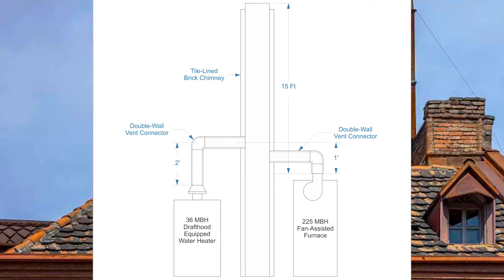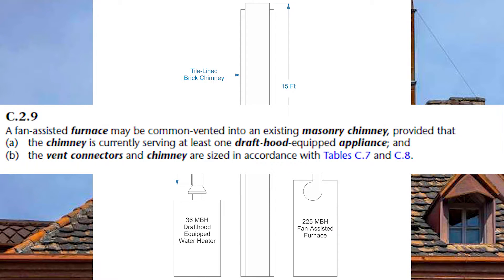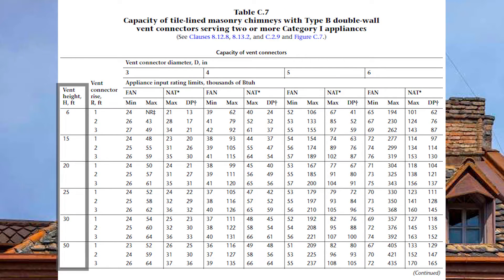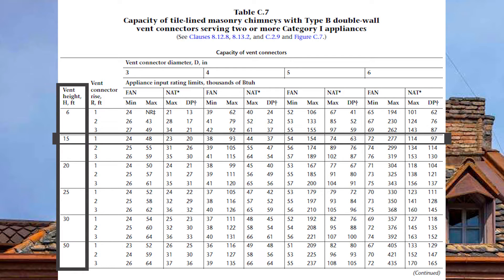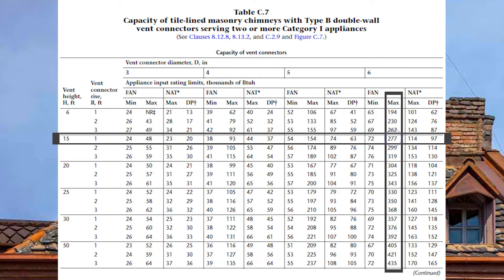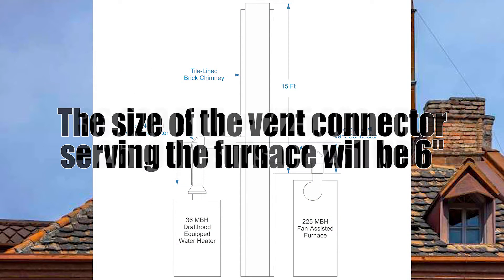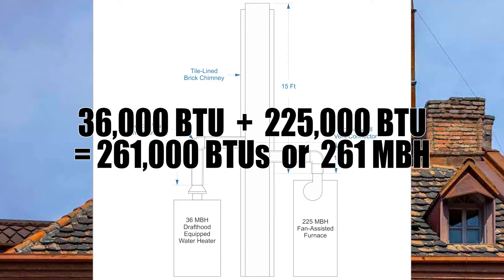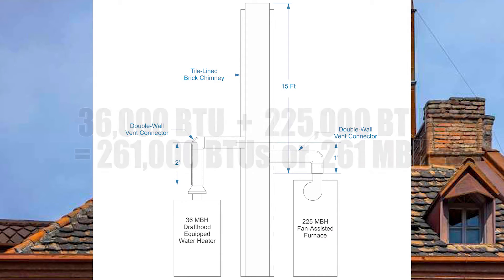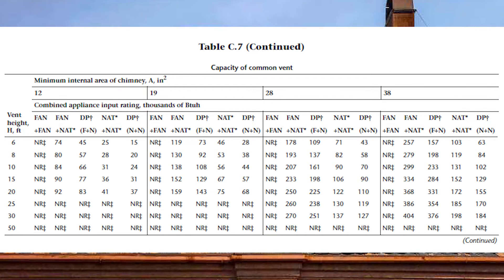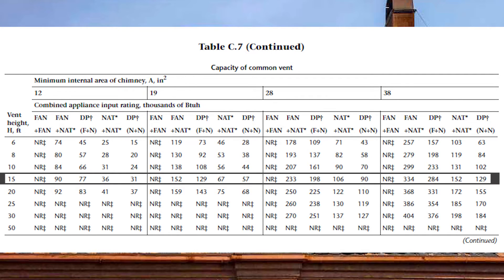Now let's size the fan-assisted furnace. GVR C29 specifically states that if you have a fan-assisted appliance connected together with a draft-hood-equipped appliance into a chimney, that is allowed — but both must be present. Going down to a 15-foot vent height, across on a one-foot vent connector rise, to 6-inch fan max, which is good to 277 MBH — that's good. Before sizing the chimney, I need to add up the total BTU load: 36 MBH plus 225 MBH equals 261 MBH. Scrolling down Table C7 to the capacity of common vent, at a 15-foot vent height on the DPF+N column, I need to go to 38 square inches to get 284,000 BTUs.